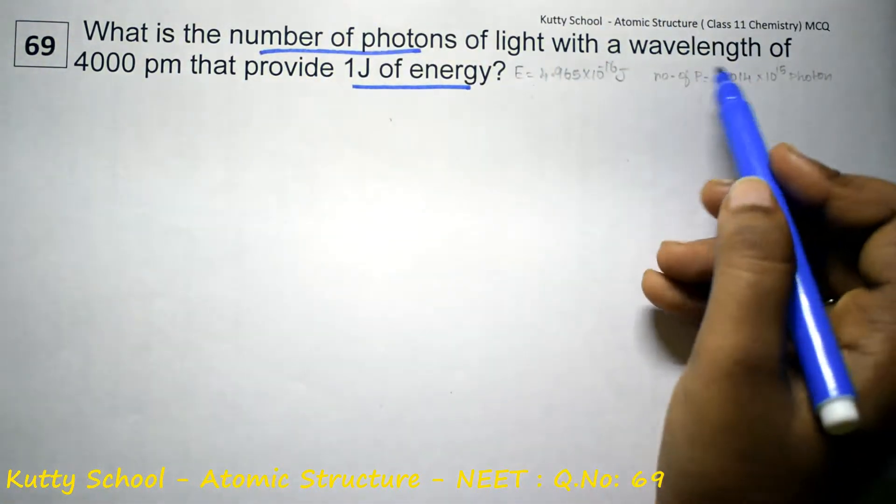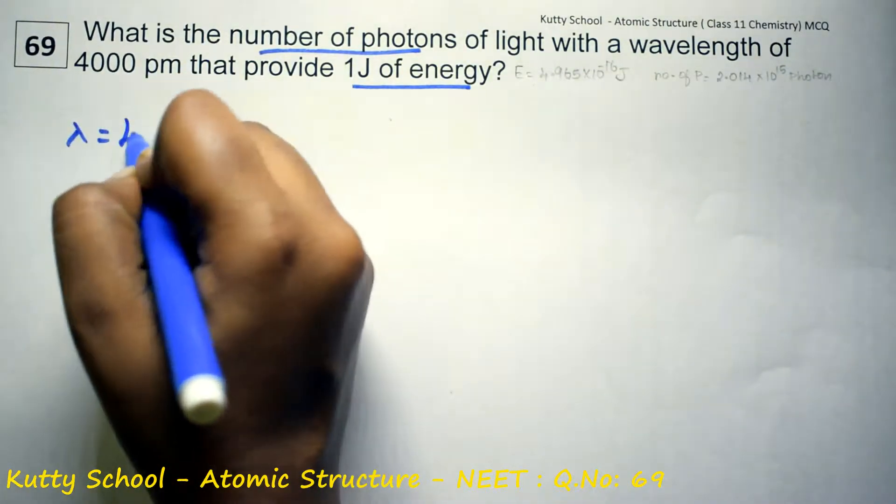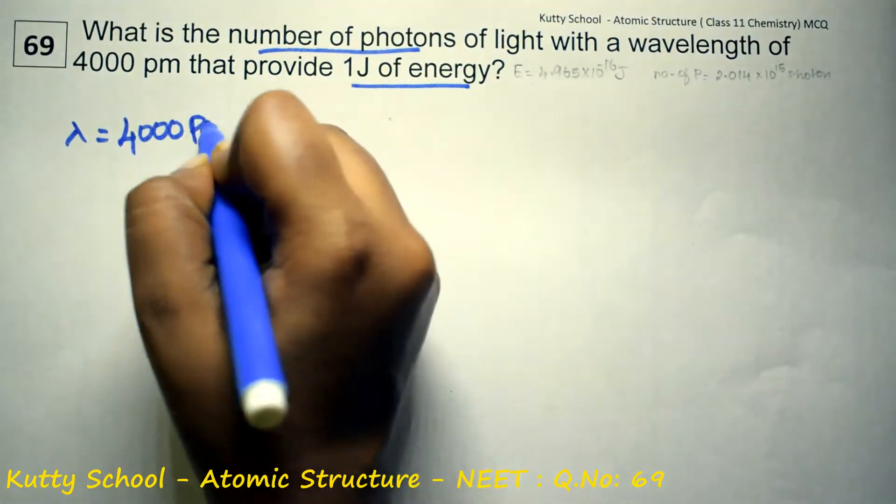Number of photons - we need to find for a given wavelength. The wavelength lambda is equal to 4000 picometer.